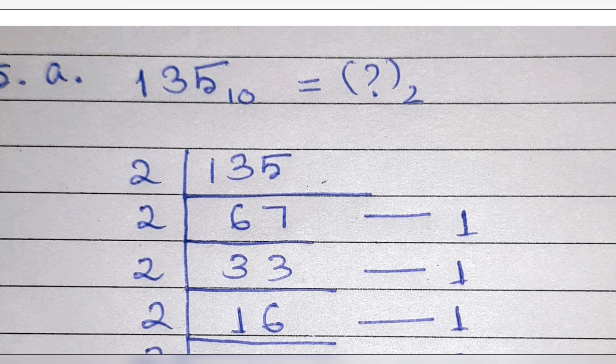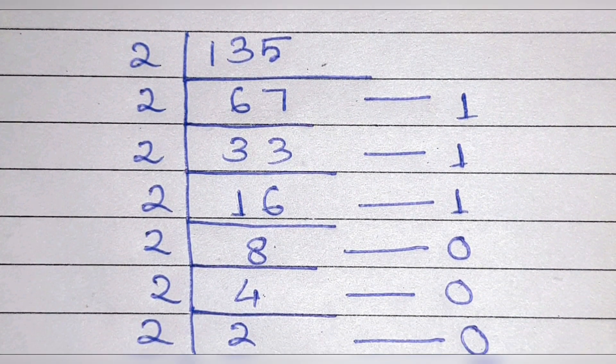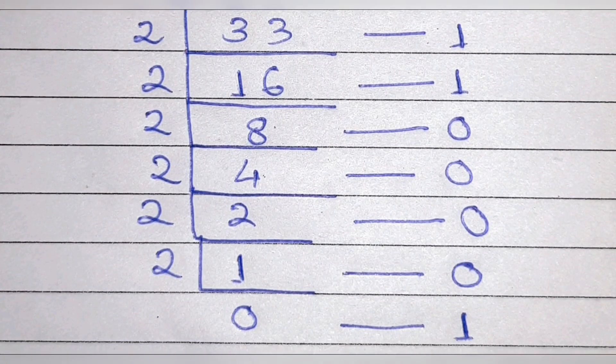For that we have to divide the number by two. I have divided 135 by two. First time we will get 67 and remainder is one, then 33 remainder is one, after that 16 remainder is one.